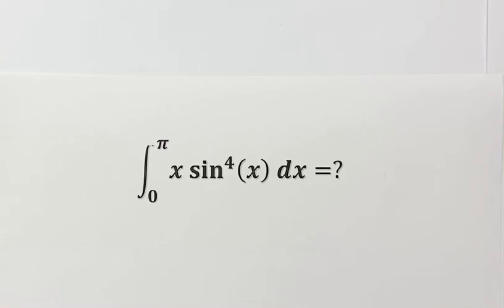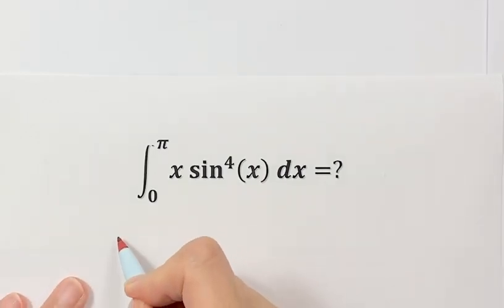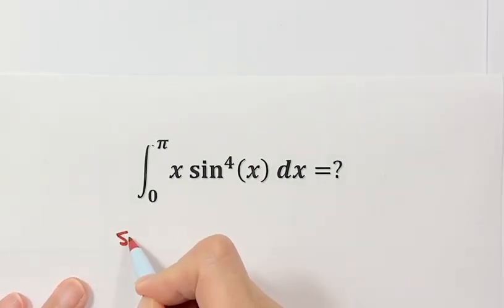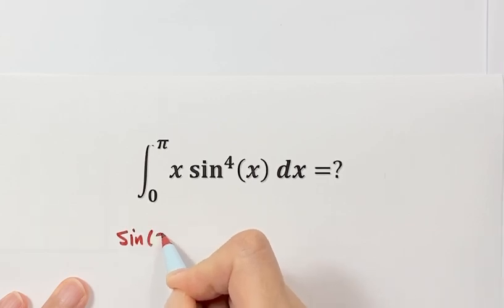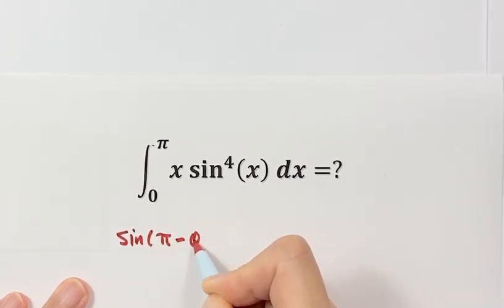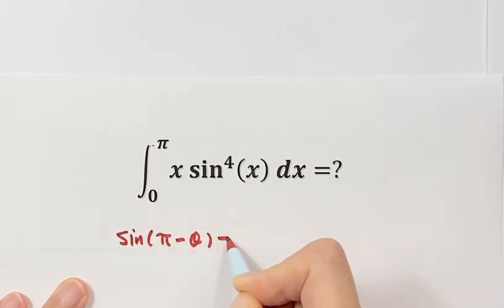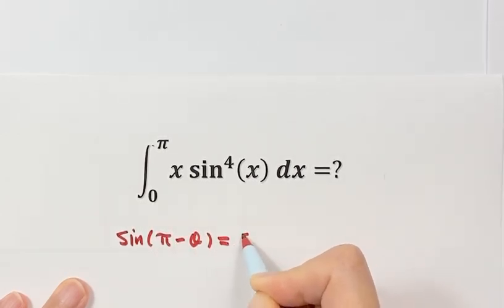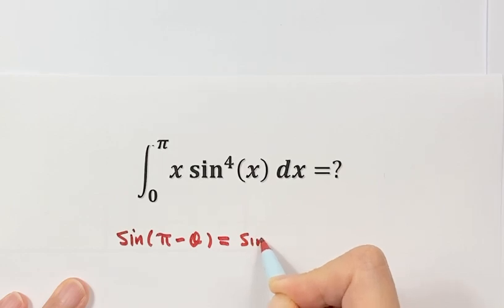In this video, we are going to evaluate a definite integral. First, we are going to write down a trig identity that we are going to use: sine of (π minus θ) equals sine θ.